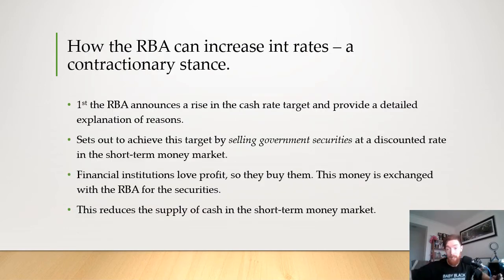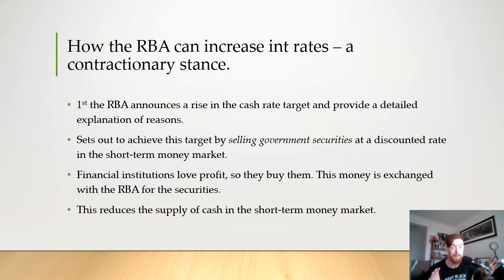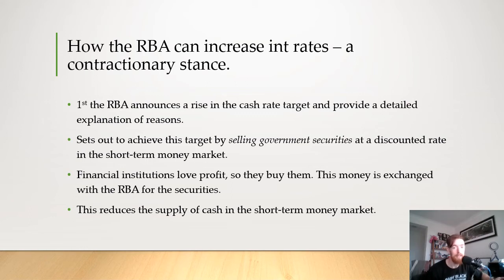Now let's look at how the RBA can increase interest rates with a contractionary stance. On the first Tuesday of the month, the RBA announces a rise in the cash rate target and provides a detailed explanation of the reasons — it's worth looking these up on the RBA website, as they provide useful information for answering questions about recent economic events. They then set out to achieve this target by selling government securities at a discounted rate in the short-term money market. By selling at a discounted rate, people are more willing to buy them. When financial institutions buy these securities, money is exchanged with the RBA, which removes money from the money supply and reduces the supply of cash in the short-term money market.